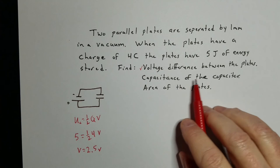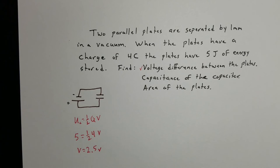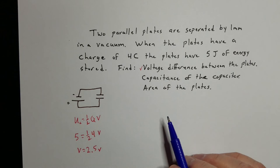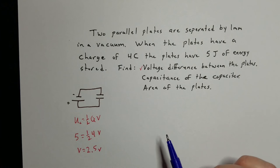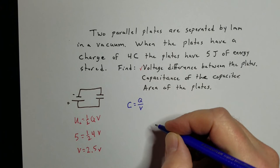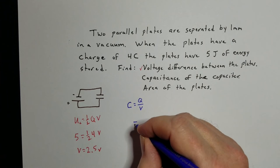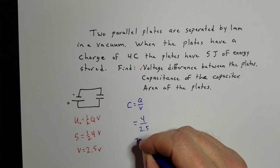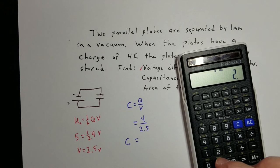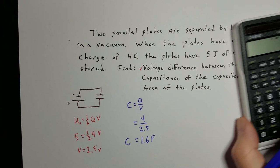Now find the capacitance. Since we don't have the area yet, we can't use the geometric formula, but we can use C = Q/V. The charge is 4 coulombs and the voltage is 2.5 volts. So C = 4 / 2.5 = 1.6 farads as the capacitance of this capacitor.